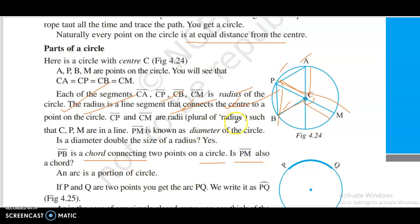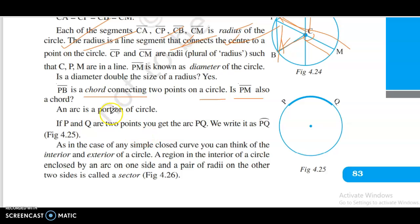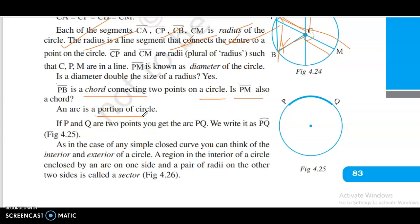PQ is a portion of a circle. If P and Q are two points, you get the arc PQ. We write it as arc PQ, figure 4.25. PQ is a chord.